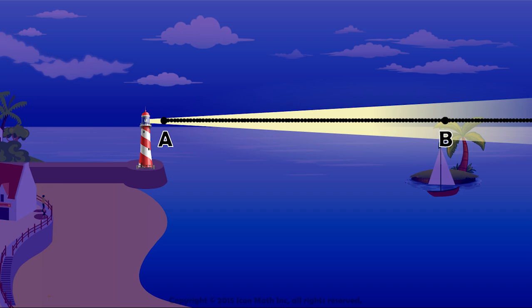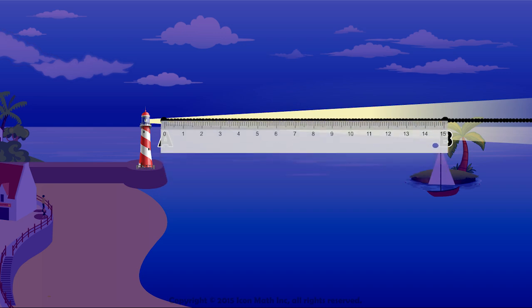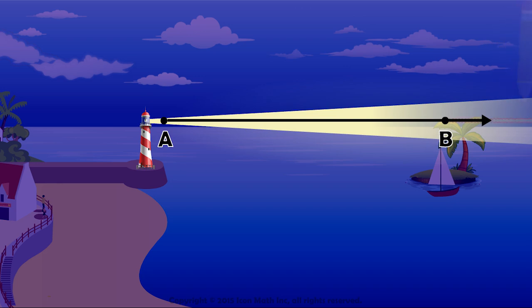So to represent this, and as we did for line segments, we can use our ruler and a pencil to connect between end point A and passing through B, but not stopping there. And at some point after, we put an arrow to indicate that the light keeps going.